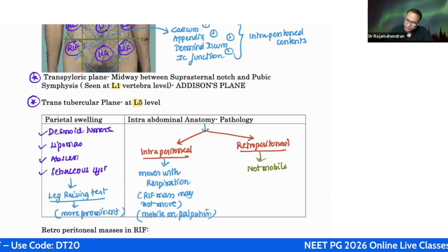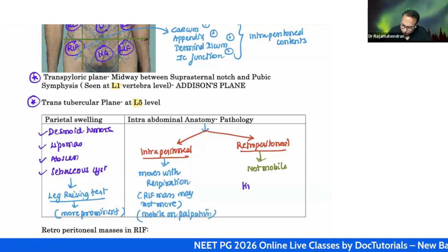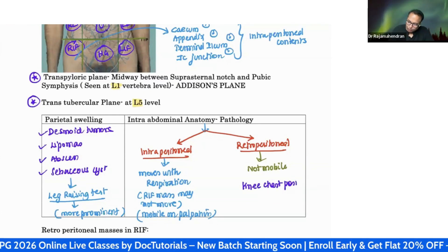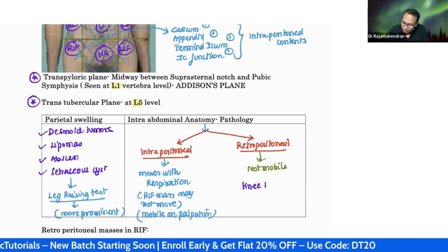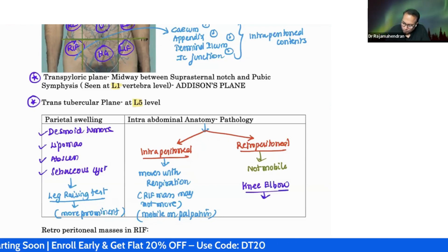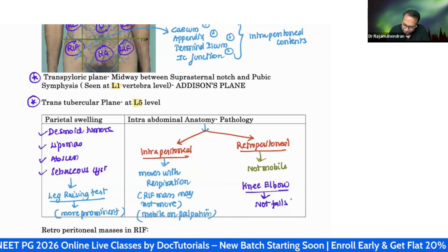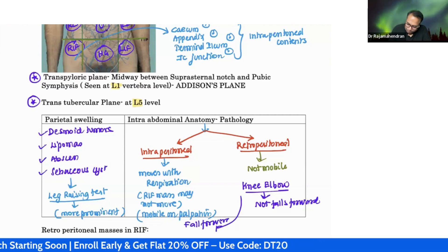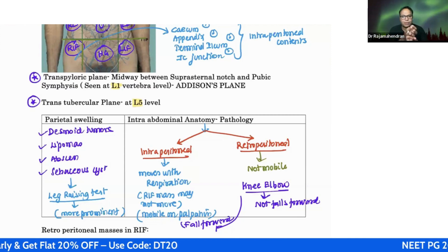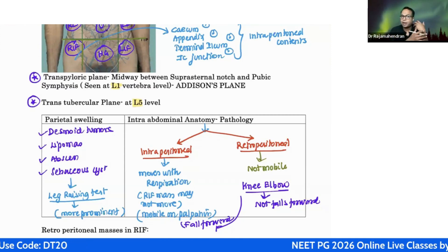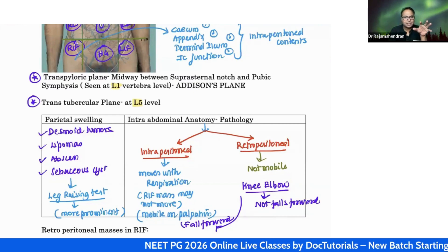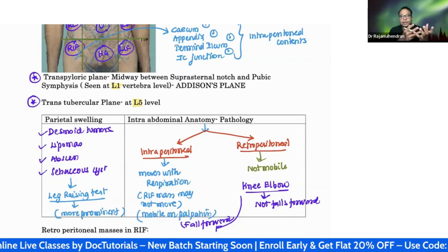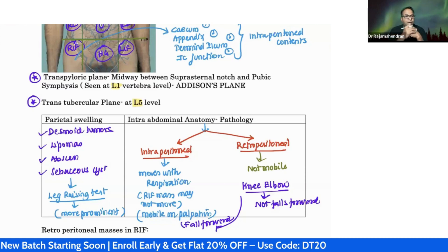Another test is the knee-elbow position: put the patient in the knee-elbow position and see if the swelling falls forward. Retroperitoneal swellings do not fall forward, whereas intraperitoneal swellings will fall forward. So the simple rule is: parietal swelling - leg raising test becomes more prominent; intraperitoneal - falls forward in knee-elbow position; retroperitoneal - does not fall forward.